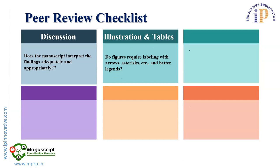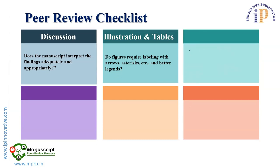Illustrations and Tables: Are the figures, diagrams, and tables of sufficiently good quality and appropriately illustrative of the paper's contents? Do figures require labeling with arrows and better legends? References: Does the manuscript cite the latest, important, and authoritative references appropriately in the introduction and discussion sections? Checking references is a major factor a reviewer must address.